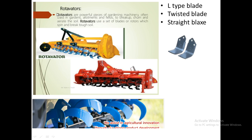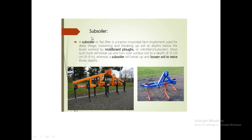Other primary tillage implements include the rotavator and the subsoiler. The rotavator is a powerful device for breaking down tough soil. It has different types of blades: L-type blades, twisted blades, and straight blades. The L-type blade has an L-shaped side profile; the twisted blade is twisted at an angle. The subsoiler is also a primary tillage implement that helps break down and loosen the soil to a greater depth.